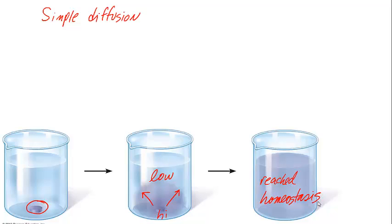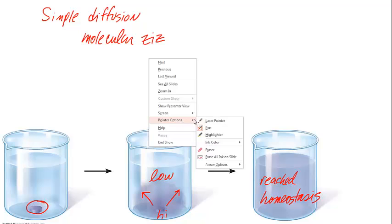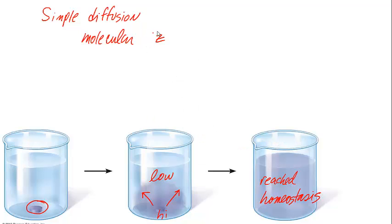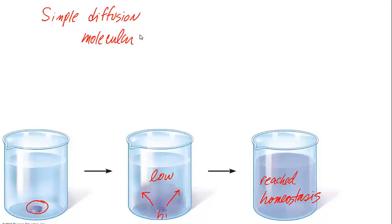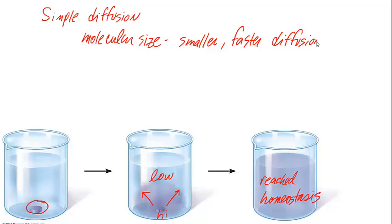Some of the factors that affect the speed of diffusion include molecular size — the smaller the molecular size, the faster the molecule is going to move and the faster the rate of diffusion. Another important factor is temperature. The higher the temperature, the faster the diffusion rate as well.